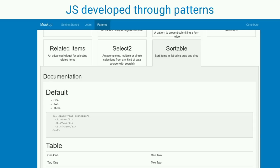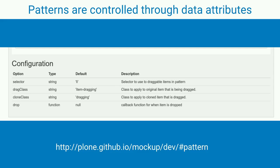About our JavaScript solution: we provide JavaScript modules called patterns that can be easily applied to your theme just by setting classes and attributes. For example, apply the class 'pat-sortable' to an HTML list and automatically the list items will be draggable and droppable. This pattern solution is called mock-up, and I provide the link in the slides I will share.